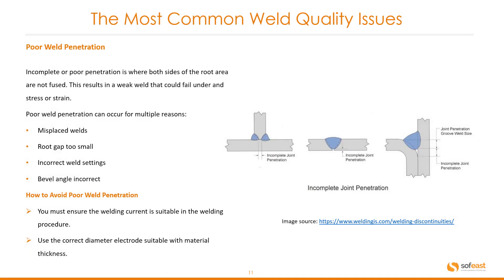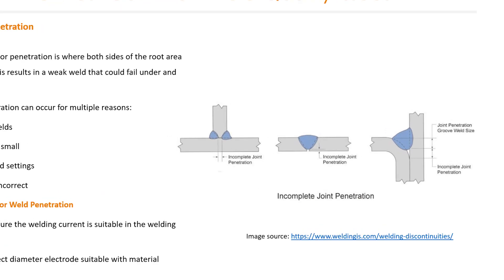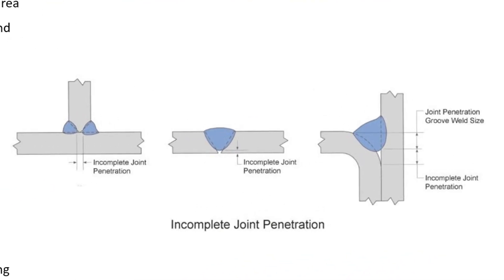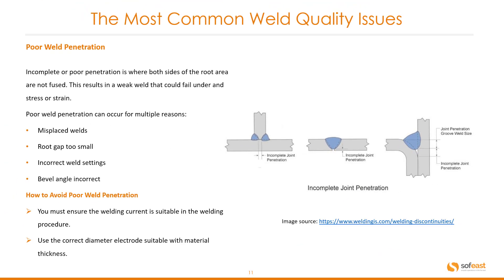Poor or incomplete penetration is where both sides of the root area are not fused, resulting in a weak weld that could fail under stress or strain. Poor weld penetration can occur for multiple reasons: misplaced welds, root gap too small, incorrect weld settings, and the bevel angle being incorrect. This image on the right shows some examples of incomplete joint penetration. To avoid poor weld penetration, ensure the welding current is suitable for the welding procedure and use the correct diameter electrode suitable for the material thickness.